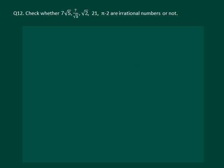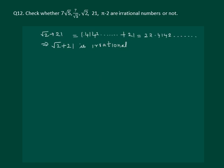The third part of the question asks if root 2 plus 21 is irrational or not. We have root 2 equal to 1.4142 and so on. It is an irrational number, and plus 21 will give us 22.4142 and so on, implying that root 2 plus 21 is again an irrational number.